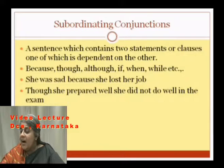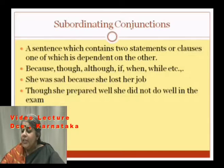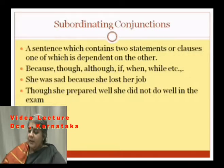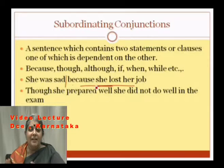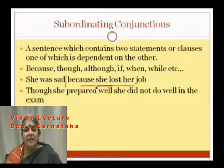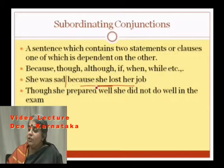Words used for subordinating conjunctions: because, though, although, if, when, while, etc. Example: 'She was sad because she lost her job.' 'She was sad' is the main clause. 'Because she lost her job' cannot stand on its own — it is a sentence fragment, a subordinate clause dependent on the main clause.